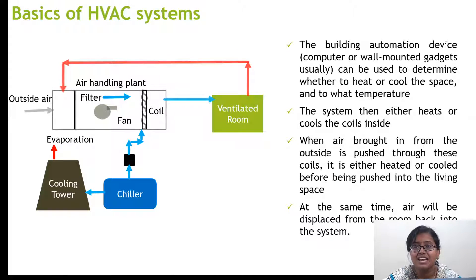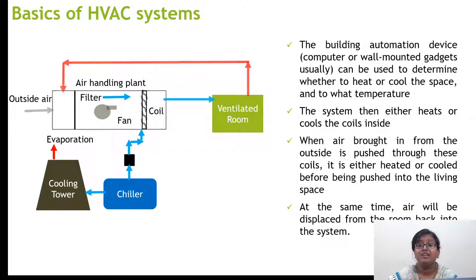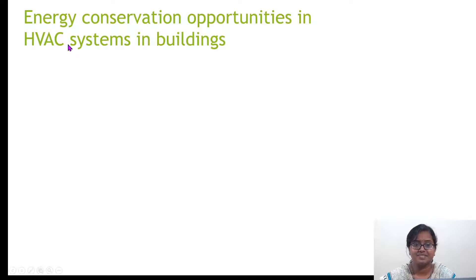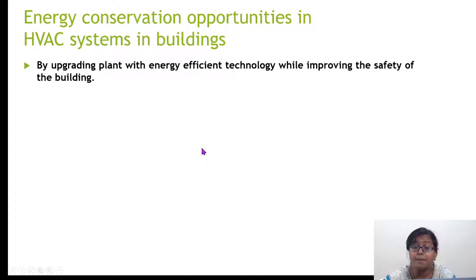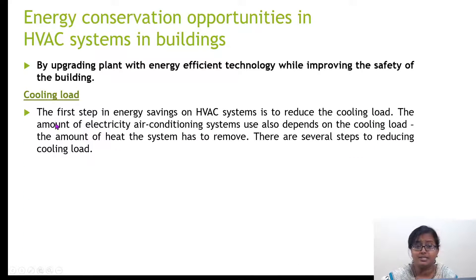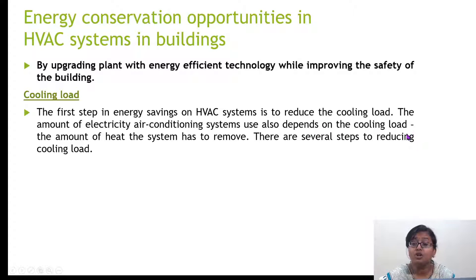In this HVAC system there is a lot of scope for saving energy. For example, by increasing the efficiency of the boiler itself, we can reduce significant energy consumption. The first step in energy saving in an HVAC system is to reduce the cooling load. The amount of electricity air conditioning systems use depends on the cooling load — that is, the amount of heat the system has to remove.